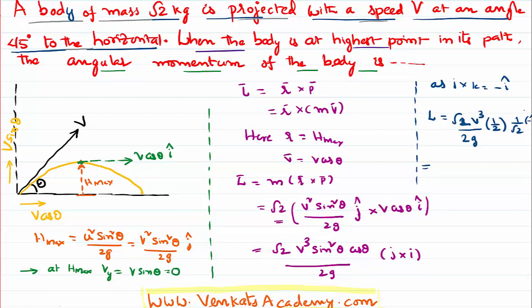The remaining value is equal to minus k cap. So angular momentum is, you can say, this root 2 and this root 2 gets canceled, and V cube, 2 and 2, over 2g, j cross i is equal to minus k cap.